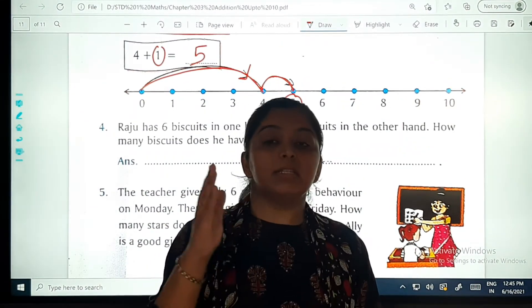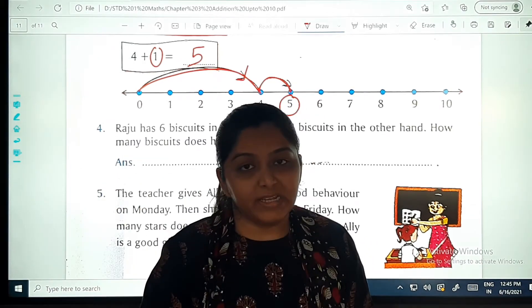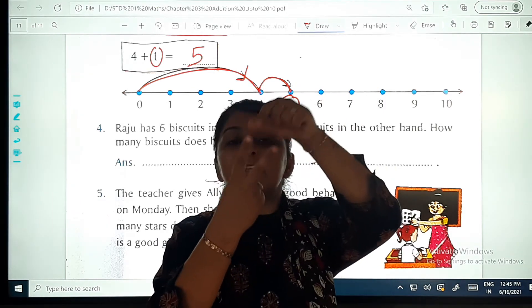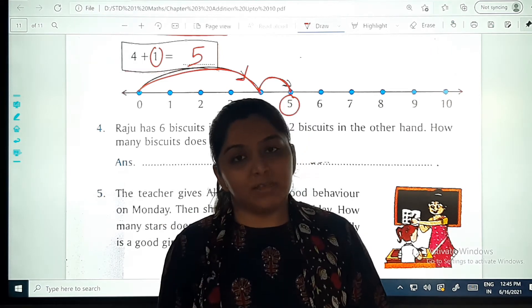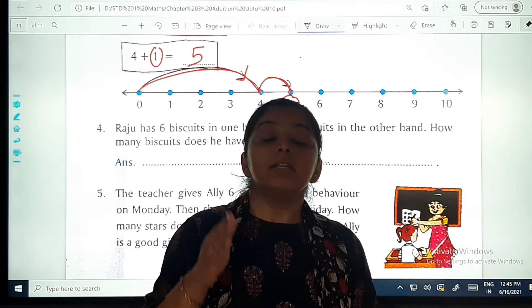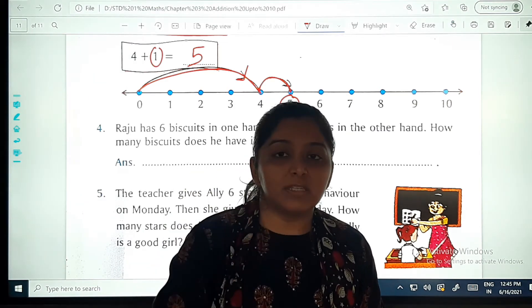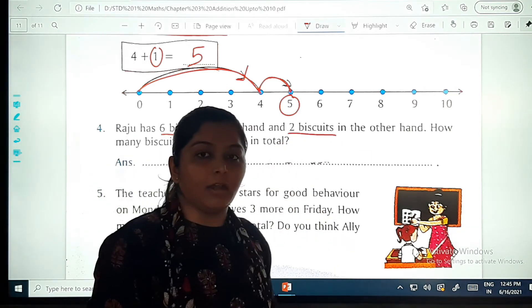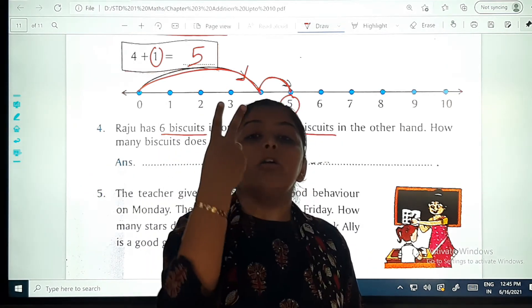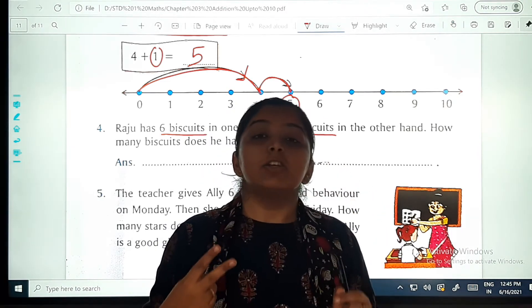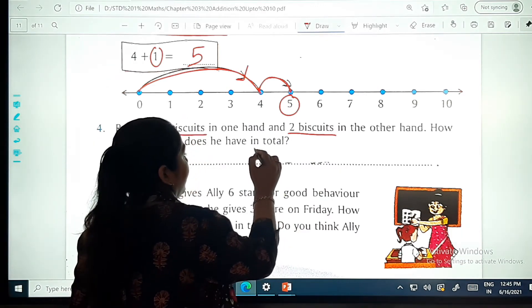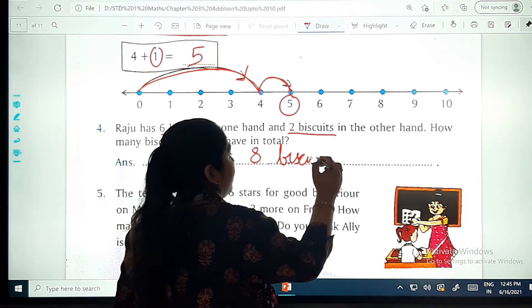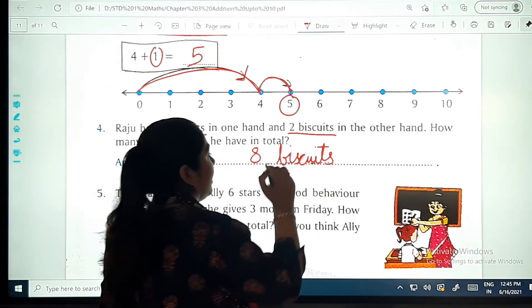Toh hum ko kya karna hai? Addition karna hai, six plus two ka. Toh six ko hum base wang lenge, aur uske baad hum ko two biscuits aur add karna hai. Toh two on your fingers, that is seven and eight. Understood? Phir se ma'am aapko bata rahi hai. Hum ko kya karna hai? Six plus two ko add karna hai. Six biscuits ko, yaha pe jo six biscuits hai unko, aur yaha pe two biscuits ko add karna hai. Toh six ko hum base mein lenge, aur two on your fingers. Toh seven and eight. So eight will be your answer, dear children. Toh aap yaha pe kya likhoge? Eight biscuits. Kya likhoge? Eight biscuits. Like this.